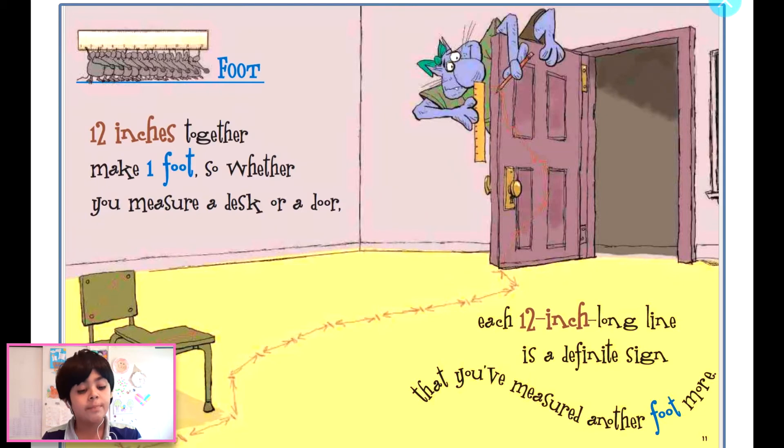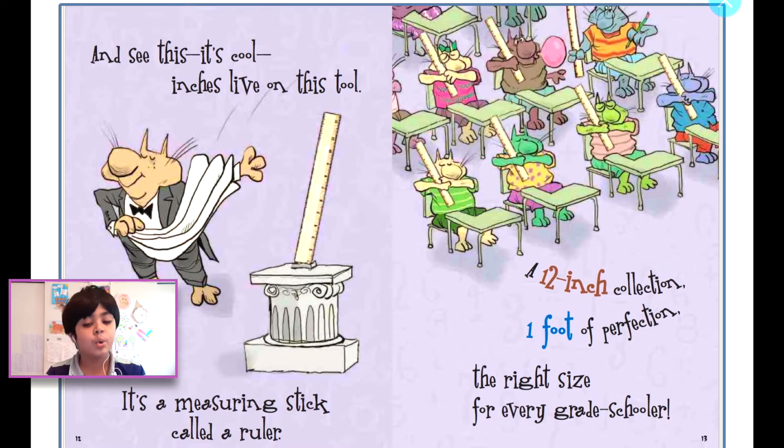So whether you measure a desk or a door, each 12-inch long line is a definite sign that you've measured another foot more. And see this? It's cool. Inches live on this tool. It's a measuring stick called a ruler. A 12-inch collection, one foot of perfection, the right size for every grade schooler.